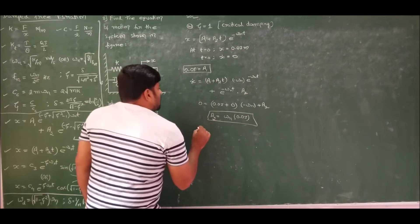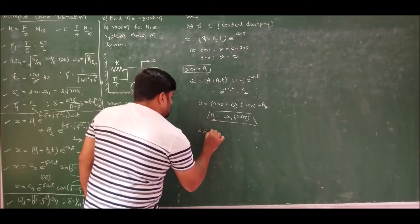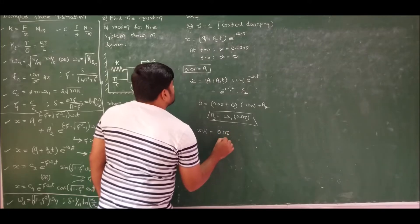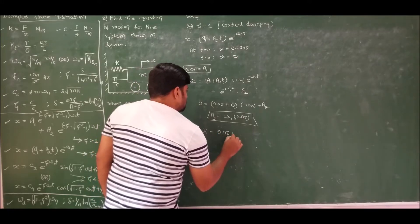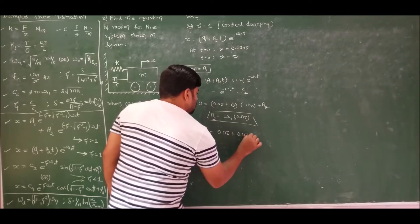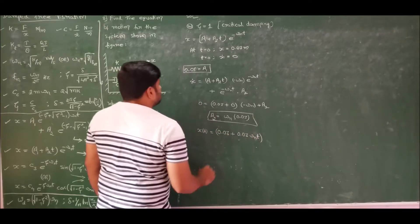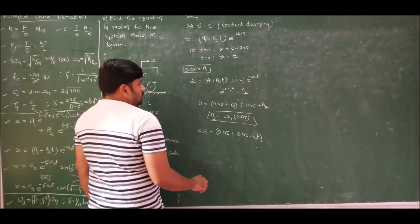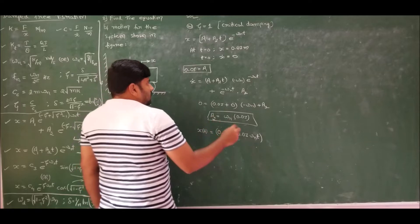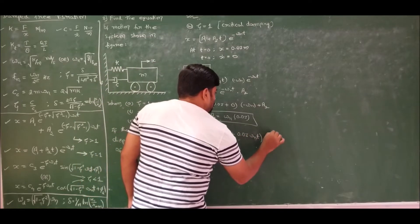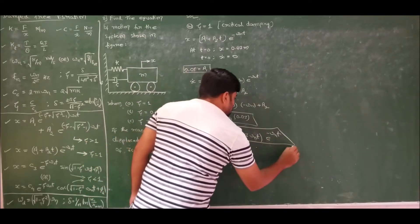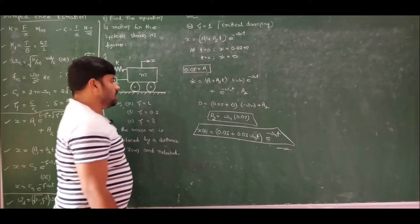Substituting both values a1 = 0.03 and a2 = 0.03·ωn, the system response for the critically damped system is: x(t) = (0.03 + 0.03·ωn·t)·e^(−ωn·t). This is the system response for the critically damped system.